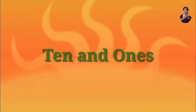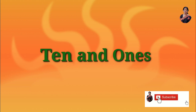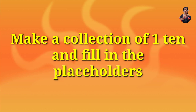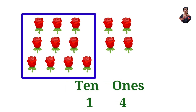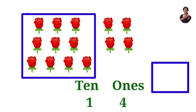Now tens and ones. Make a collection of one ten and fill in the placeholders. Here are roses. In a box, ten roses, and on the other side: one, two, three, four. That is one ten and four ones. What will be the number? One, four — fourteen. In fourteen: one ten and four ones.